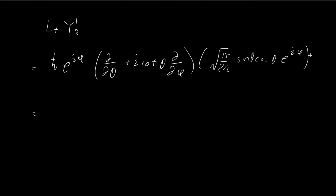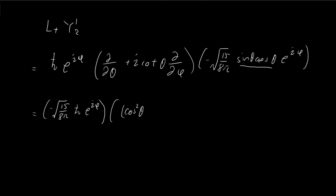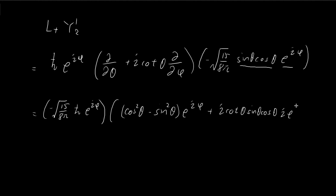Now let's evaluate this expression. First, pull the constants outside since they are unaffected by the operators. The partial derivative with respect to θ only affects the sine and cosine terms. Differentiating using the product rule: differentiating the sine term gives cosine squared θ, and differentiating the cosine term gives negative sine, so we have negative sine squared θ. The φ term is unaffected by the θ derivative. For the cotangent θ term, the φ derivative only affects the e to the iφ term, giving i e to the power of iφ.